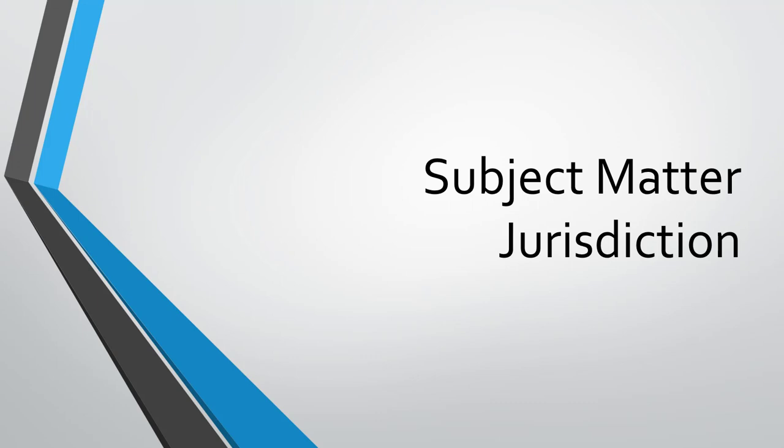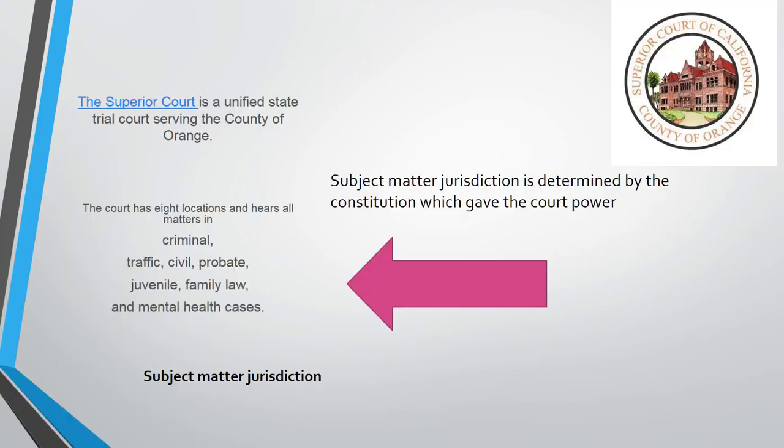Subject matter jurisdiction is straightforward. Courts are given subject matter jurisdiction when they're created by the constitution. The Superior Court of Orange County handles all matters in criminal, traffic, civil, probate, juvenile, family law, and mental health cases — that's the subject matter jurisdiction, which is quite comprehensive. What's missing are things that are exclusively federal, such as tax disputes with the IRS, bankruptcy, and federal environmental protection agency issues. A state court does not have subject matter jurisdiction over those matters.